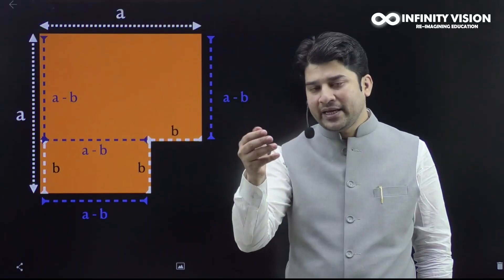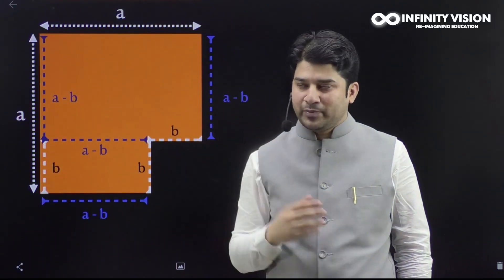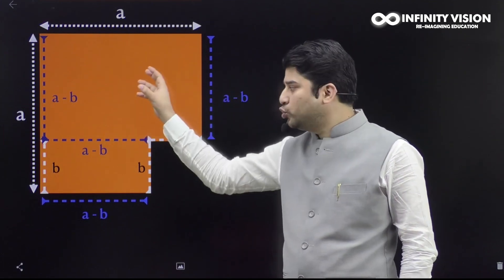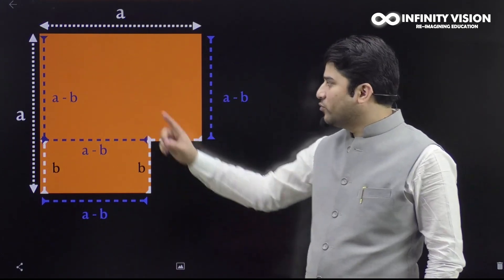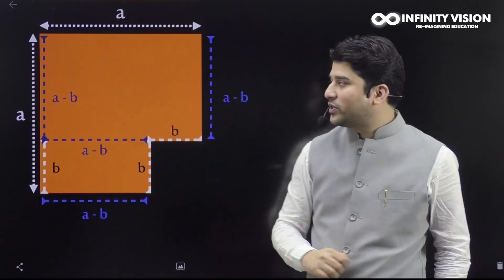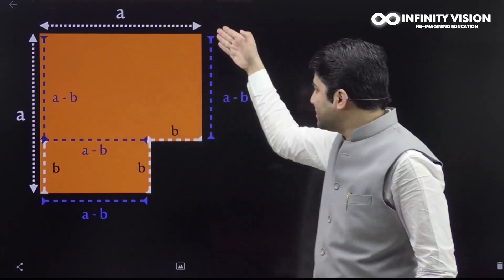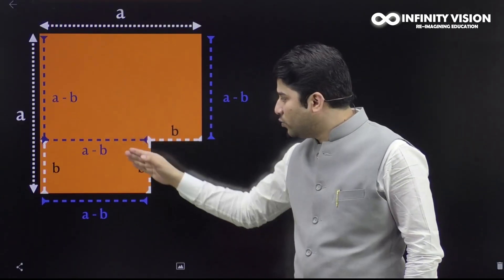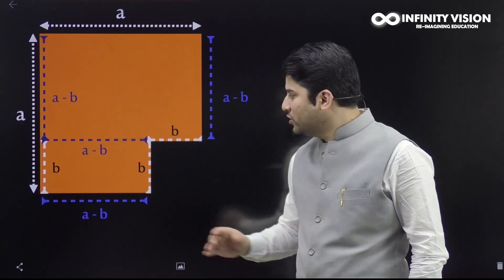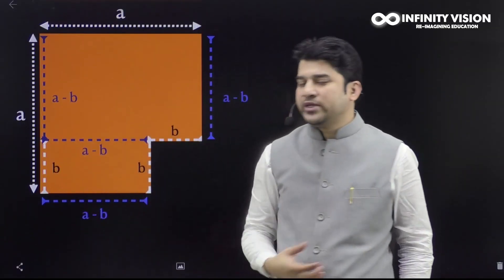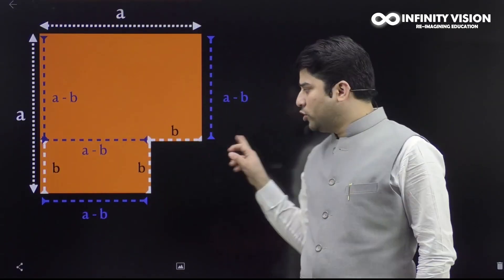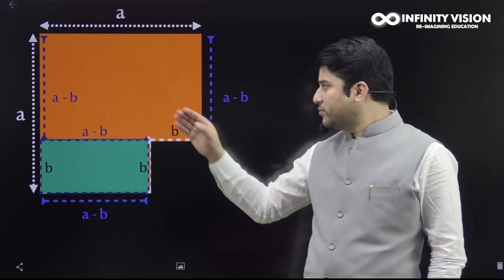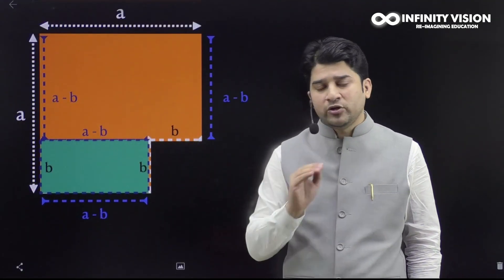So this hexagon has six sides: a, a, b, b, and a - b, a - b. Now if you look, this hexagon is made of two rectangles. The big rectangle has dimension a by (a - b), and the small rectangle has dimension b by (a - b). Both rectangles share one equal side length: (a - b).